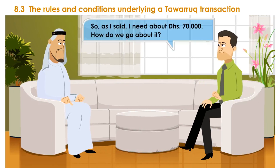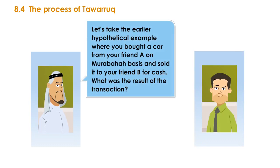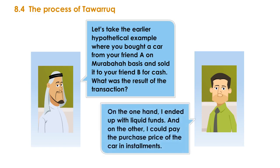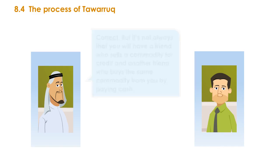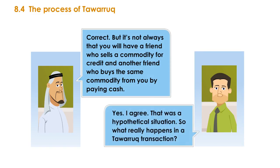Ayub: 'I need about 70,000 dirhams — how do we go about it?' The process of Tawaruk. In the earlier hypothetical example, you bought a car from friend A on Murabaha basis and sold it to friend B for cash. The result: you ended up with liquid funds, and you could pay the purchase price of the car in installments. But it is not always that you will have a friend who sells a commodity on credit and another who buys the same commodity from you for cash. So what really happens in a Tawaruk transaction?